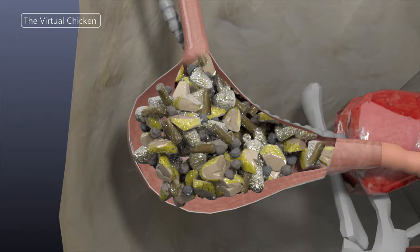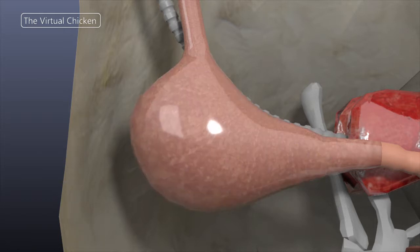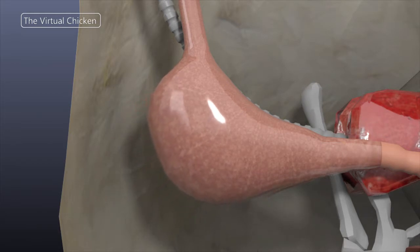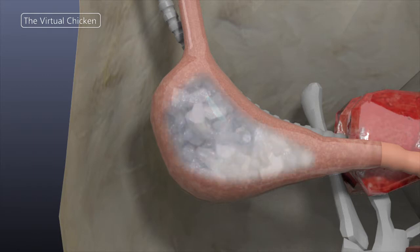Food can remain in the crop for up to 12 hours until it is transferred via peristaltic action. No actual digestion takes place in the crop as there are no digestive chemicals secreted there. However, softening and swelling of the feed will occur during the storage time.